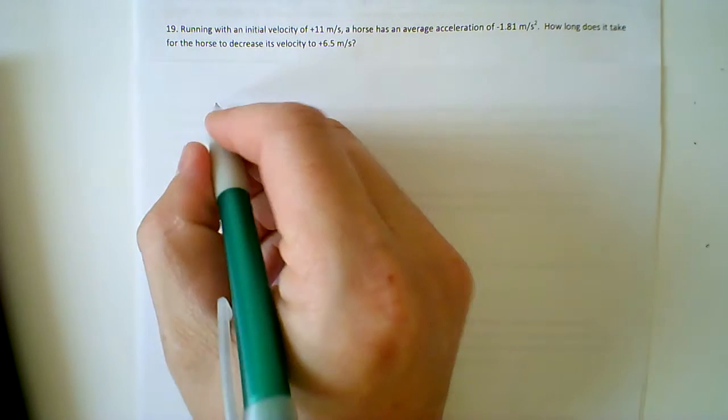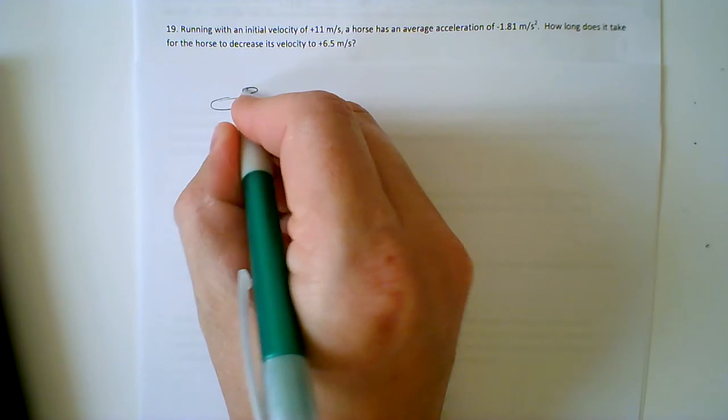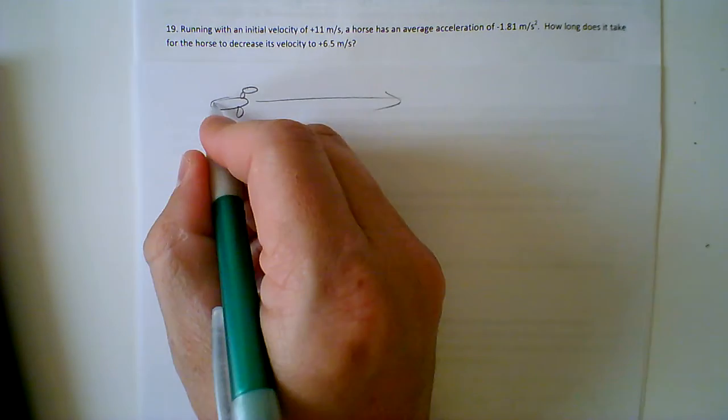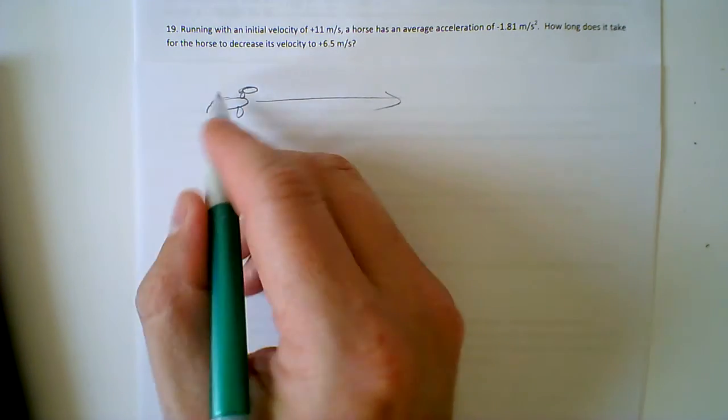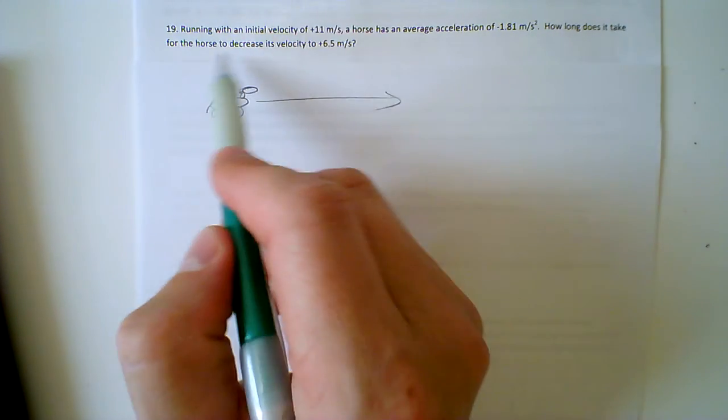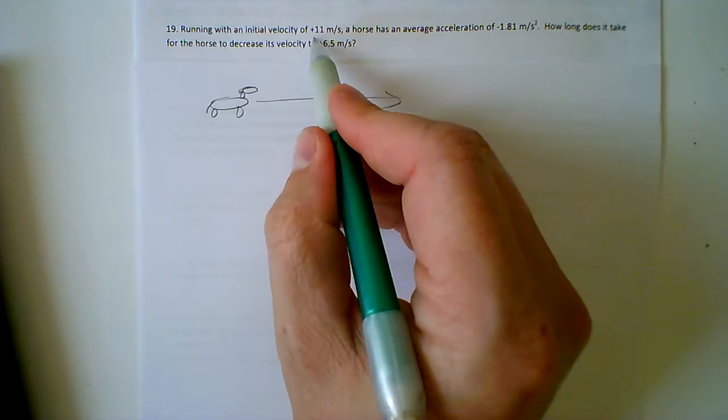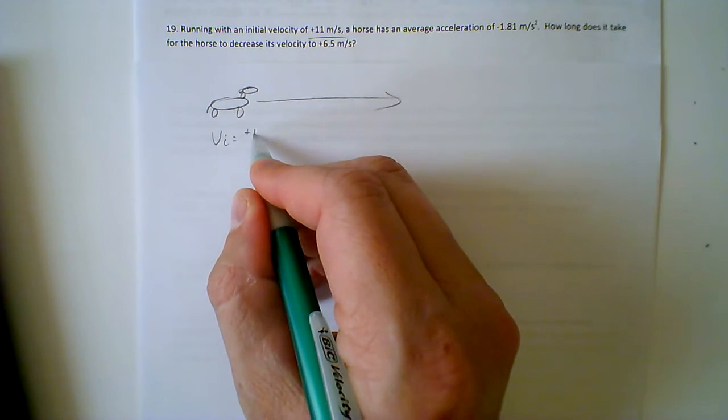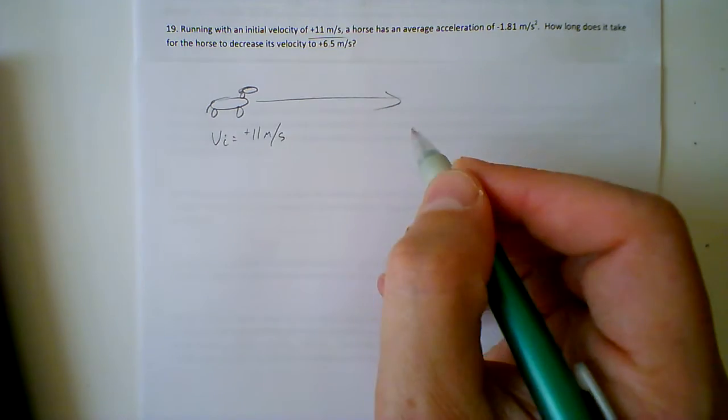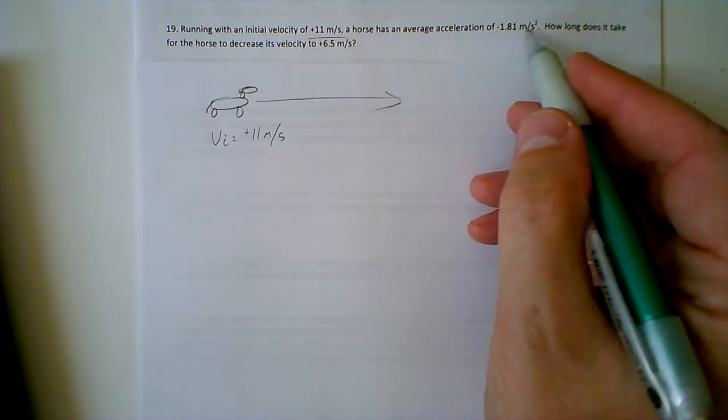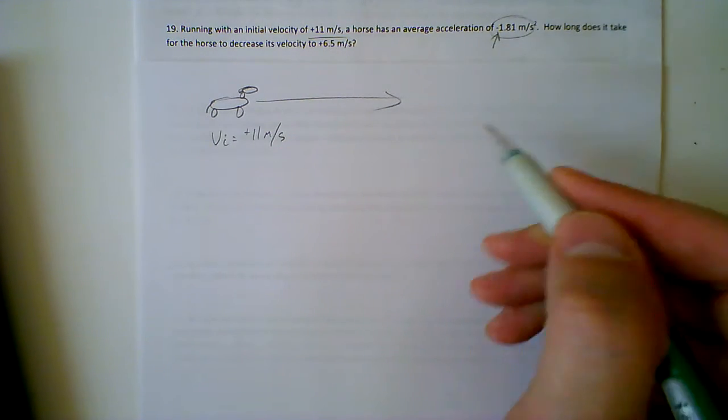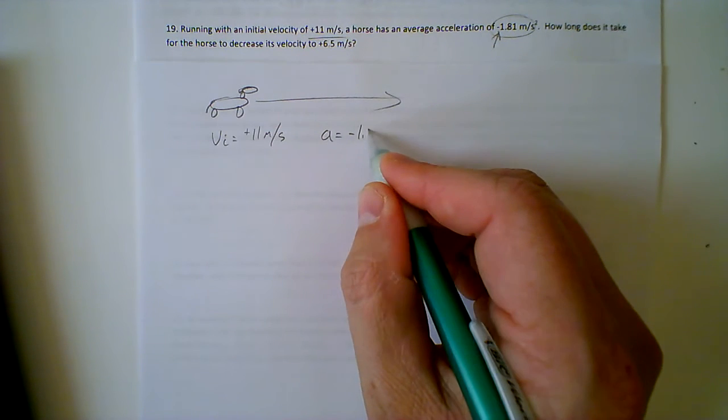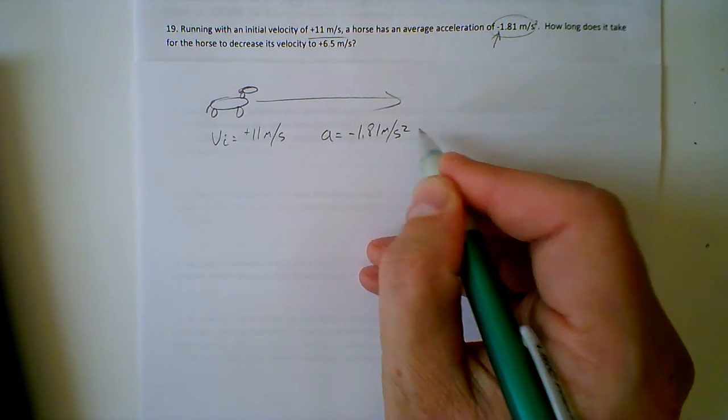In this problem we have a horse. There's my horse and it is running. Let me finish off my horse. It's running with initial velocity of vi equals positive 11 meters per second, and it has an average acceleration, actually a deceleration because there's a negative acceleration going on there, average acceleration of negative 1.81 meters per second squared.